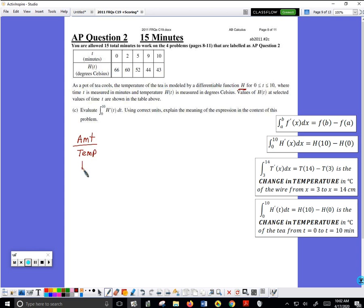Where T is measured in minutes - I don't want to forget units. Temperature H, got that already, H of T is measured in degrees Celsius. This is degrees Celsius. Values of H at selected times are shown here, so different temperatures at different times.